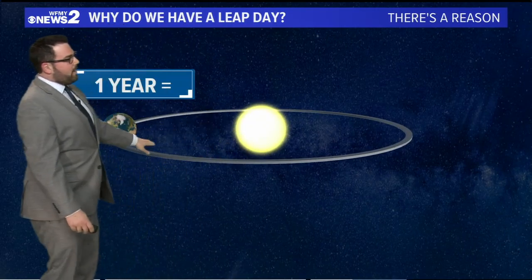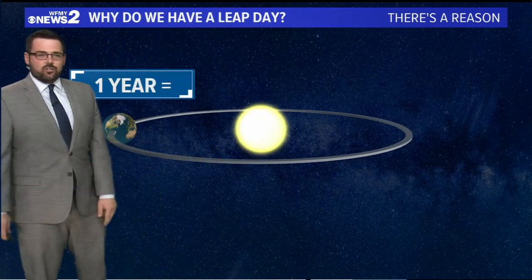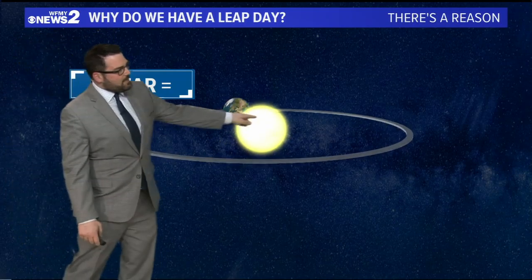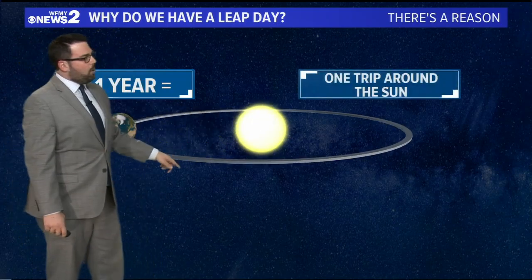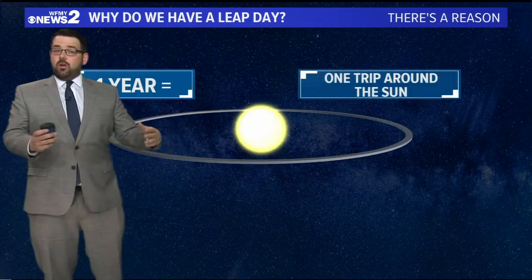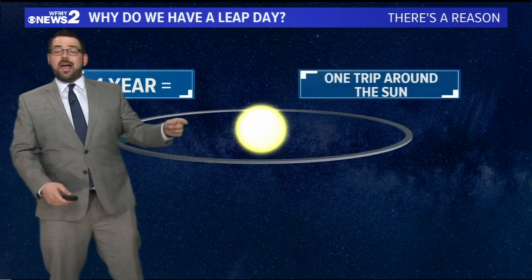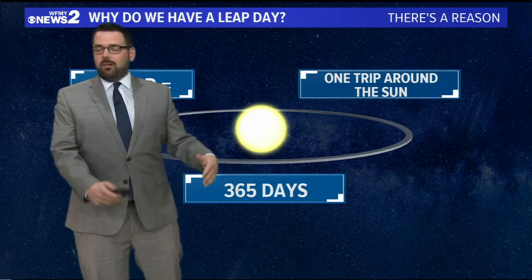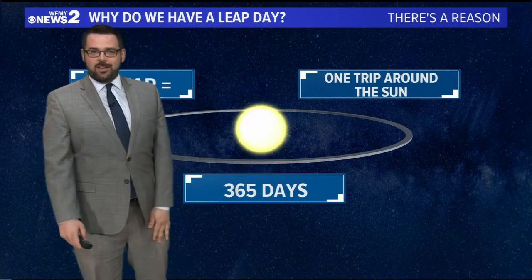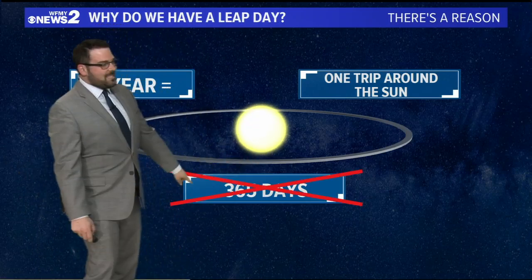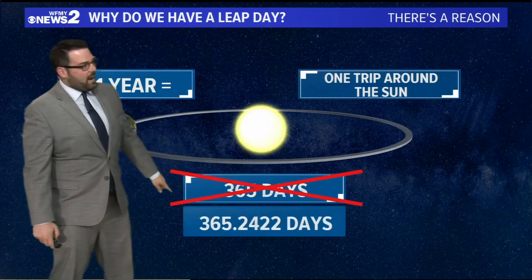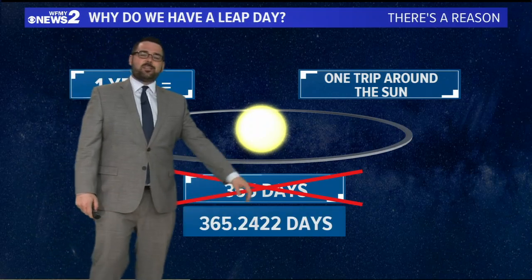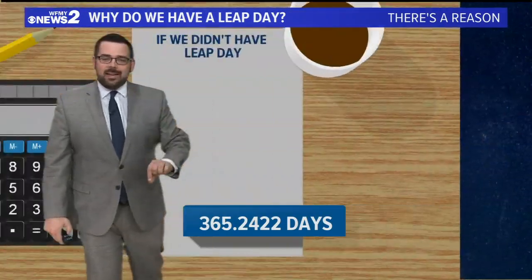Let's start out by talking about what a year is in general. One year is the time it takes the Earth to go around the sun one time. That one trip around the sun — how long does it last? 365 days, right? That's actually not right. It's 365 days with a remainder.